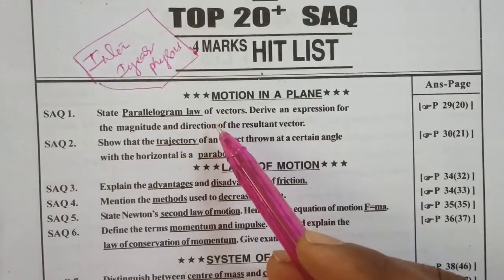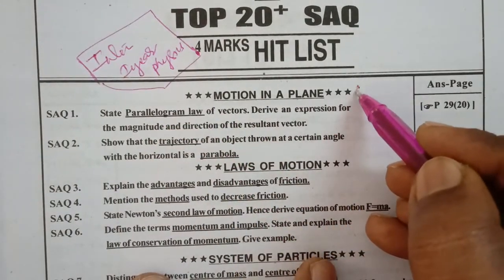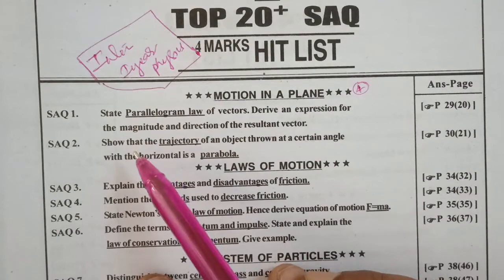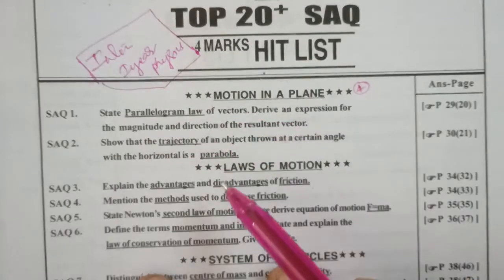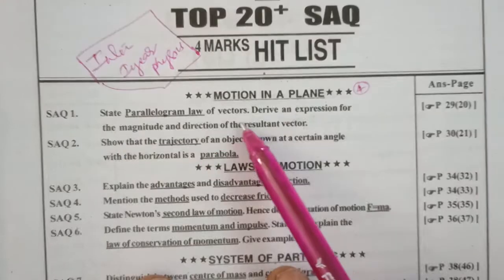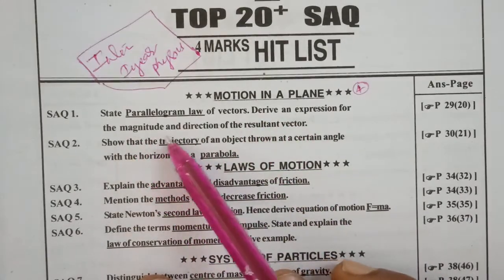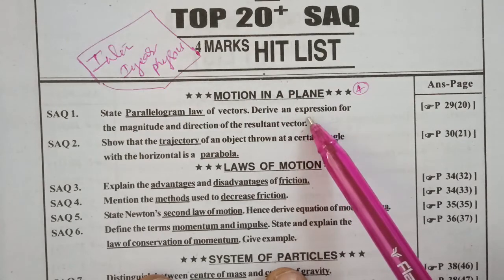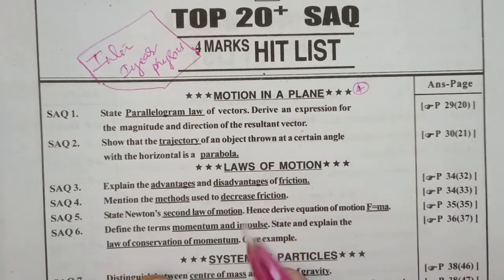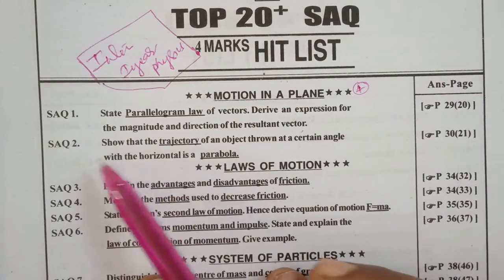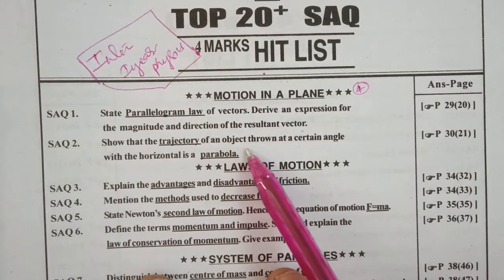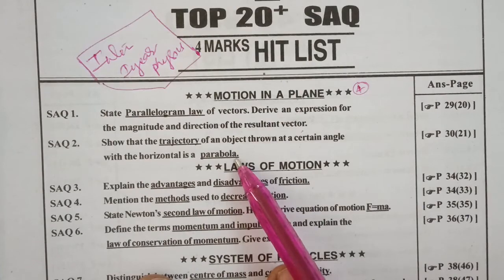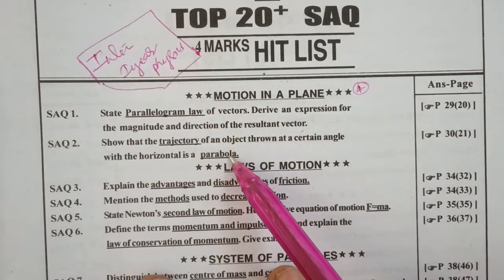Motion in a plane is the 4th chapter. In this, only 2 very gunshot questions. First: state parallelogram law of vectors, derive an expression for the magnitude and direction of the resultant vector. Second: show that the trajectory of an object thrown at a certain angle with the horizontal is a parabola. This is projectile.